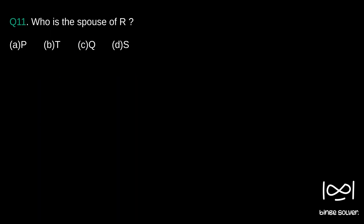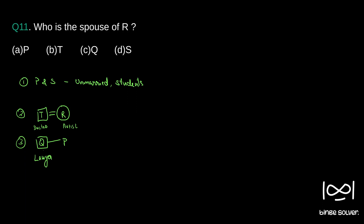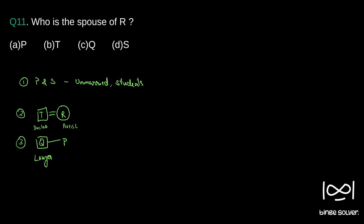Who is the spouse of R? We already have that T and R are married. So the spouse of R is T — we get B as our answer. Next question.